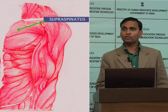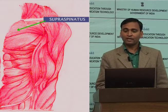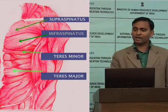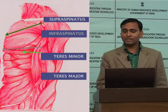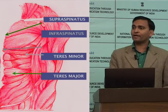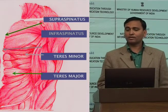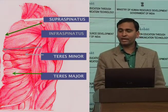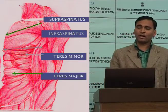The posterior compartment of shoulder muscles includes mainly four muscles: supraspinatus, infraspinatus, teres minor, and teres major. You can see them here in the diagram. So the posterior group of shoulder muscles consists of these four muscles. First, I would like to discuss the supraspinatus muscle.